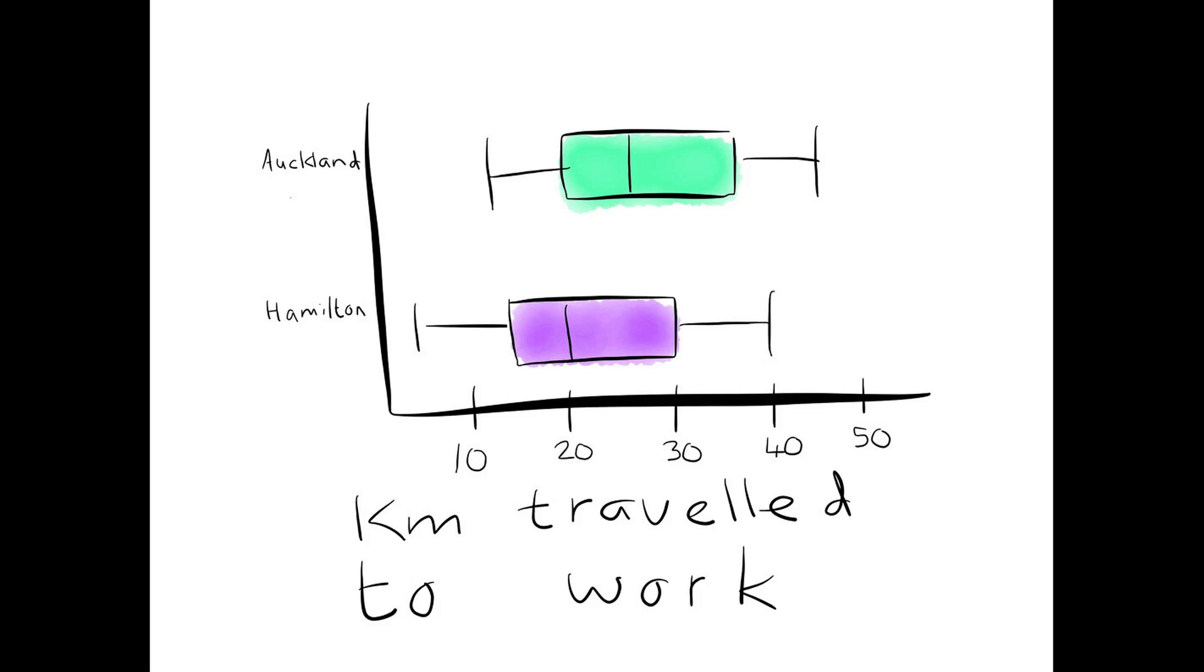Hence, I'm looking at the graph, and drawing a conclusion. My conclusion was that Aucklanders travel further to work. Then, I'm giving it examples. I've given the example of the median, which is the line in the middle, and I've actually said what the median is. So, Hamilton, the median is 20km, Auckland, the median is 25km.